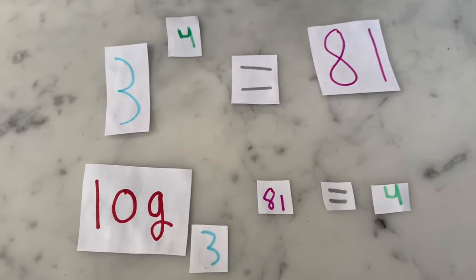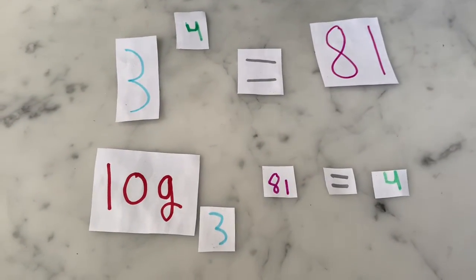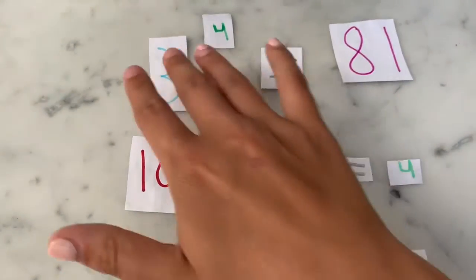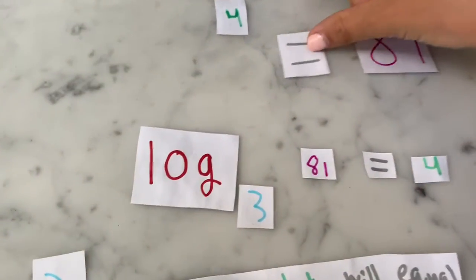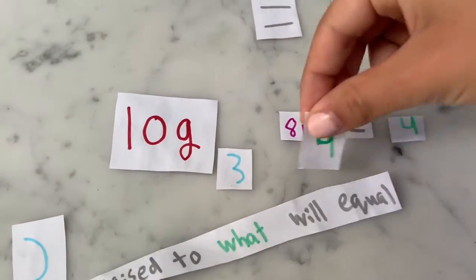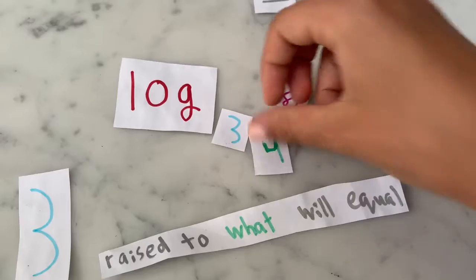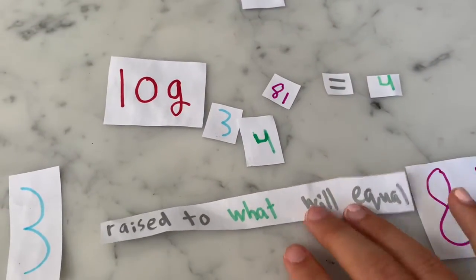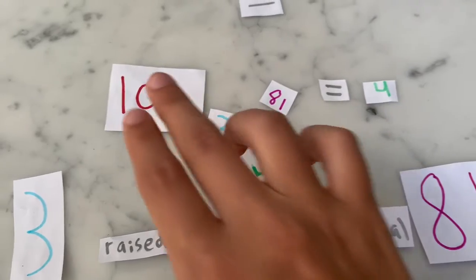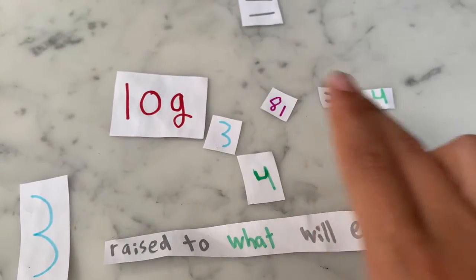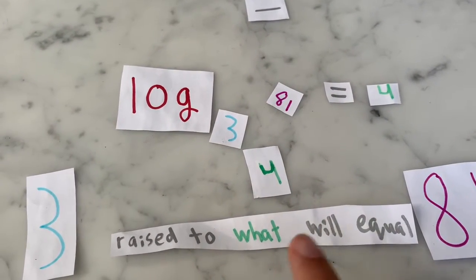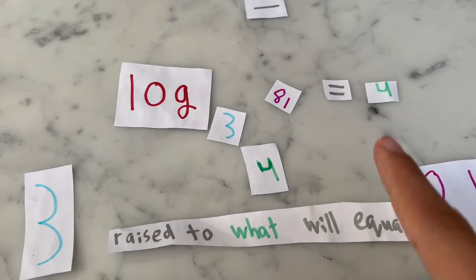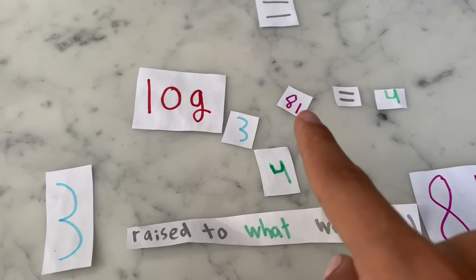So to recap, these two equations are asking 3 raised to what power, which is 4, will equal 81. So log base 3 of 81 equals 4. So 3 raised to what, which is that, will equal 81, which is this.